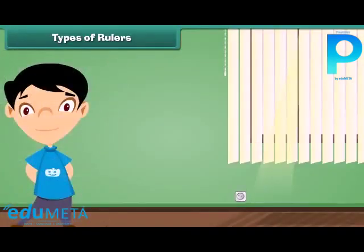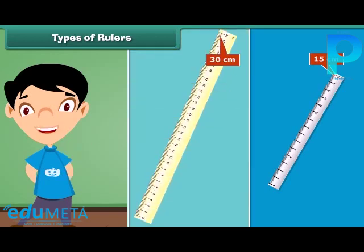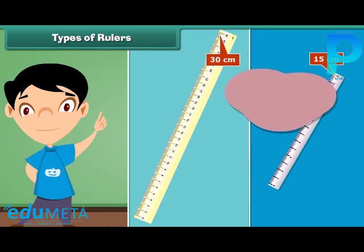A ruler comes in different lengths. The first ruler seen can measure length up to 15 centimeters. The second ruler seen can measure length up to 30 centimeters. But a ruler cannot measure all objects.